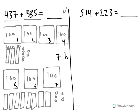I'm going to write 7h for 700s. Now we're going to count how many tens we have. We have 1, 2, 3, 4, 5, 6, 7, 8, 9, 10, 11.